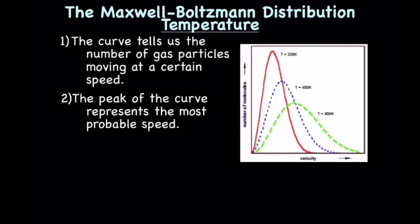The peak of the curve represents the most probable speed for any particular molecule, because that is the speed most of the molecules are at. Now, let's look at the different colored curves. The red one is at 200K, the blue one is at 400K, and the green one is at 800K. We're increasing the temperature.